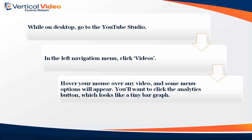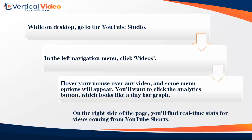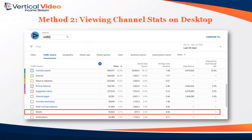While on desktop, go to the YouTube Studio. In the left navigation menu, click Videos. Hover your mouse over any video and some menu options will appear. You'll want to click the Analytics button, which looks like a tiny bar graph. On the right side of the page you'll find real-time stats for views coming from YouTube Shorts.